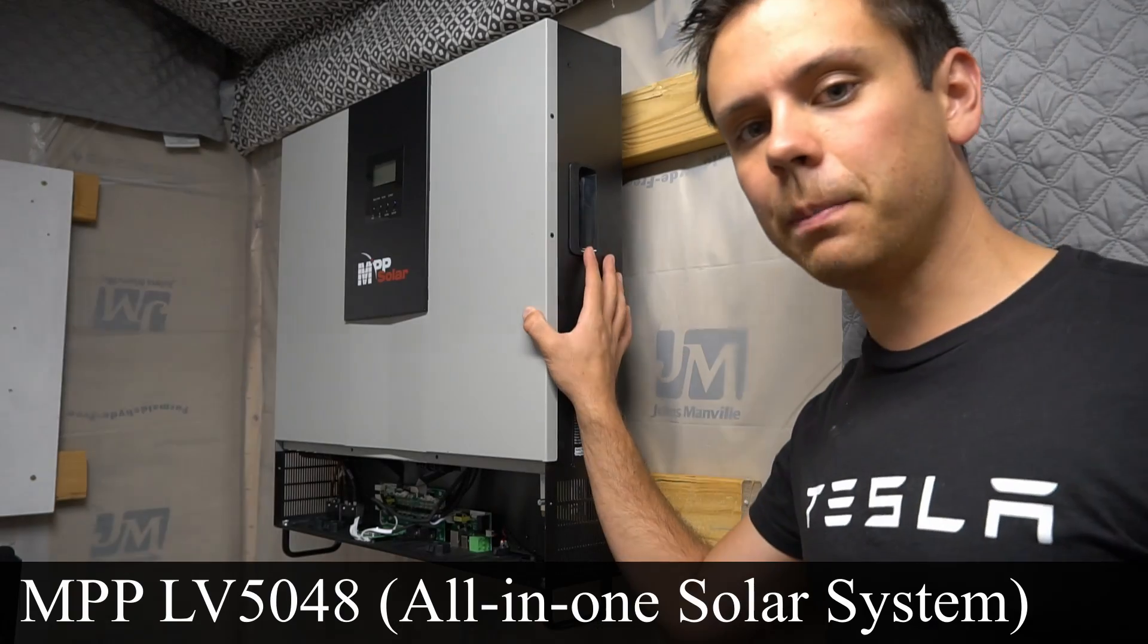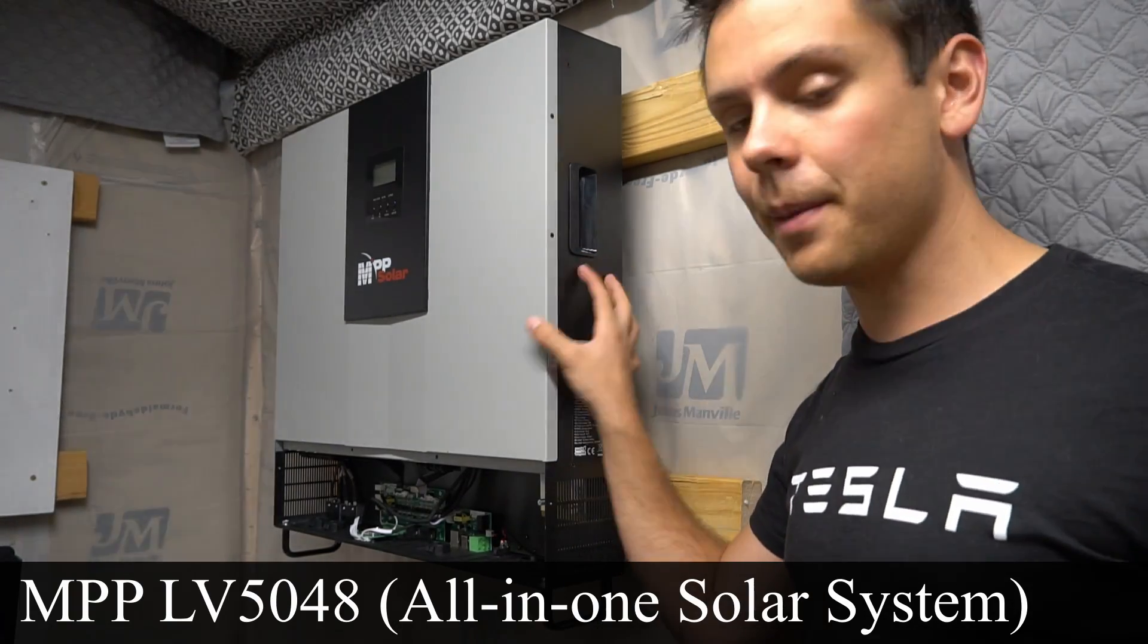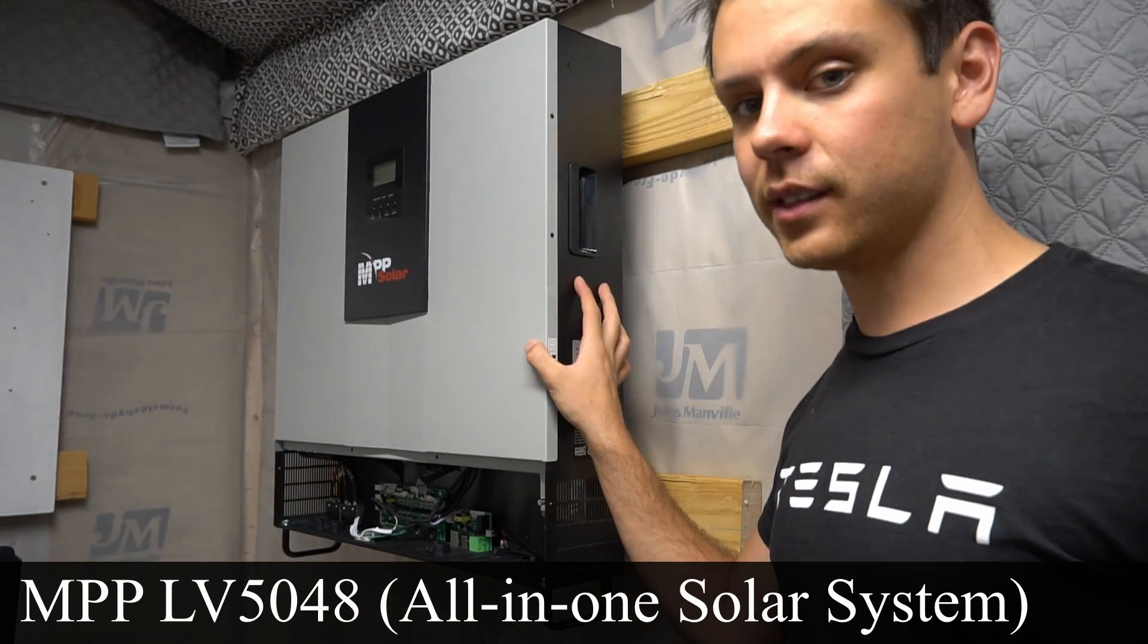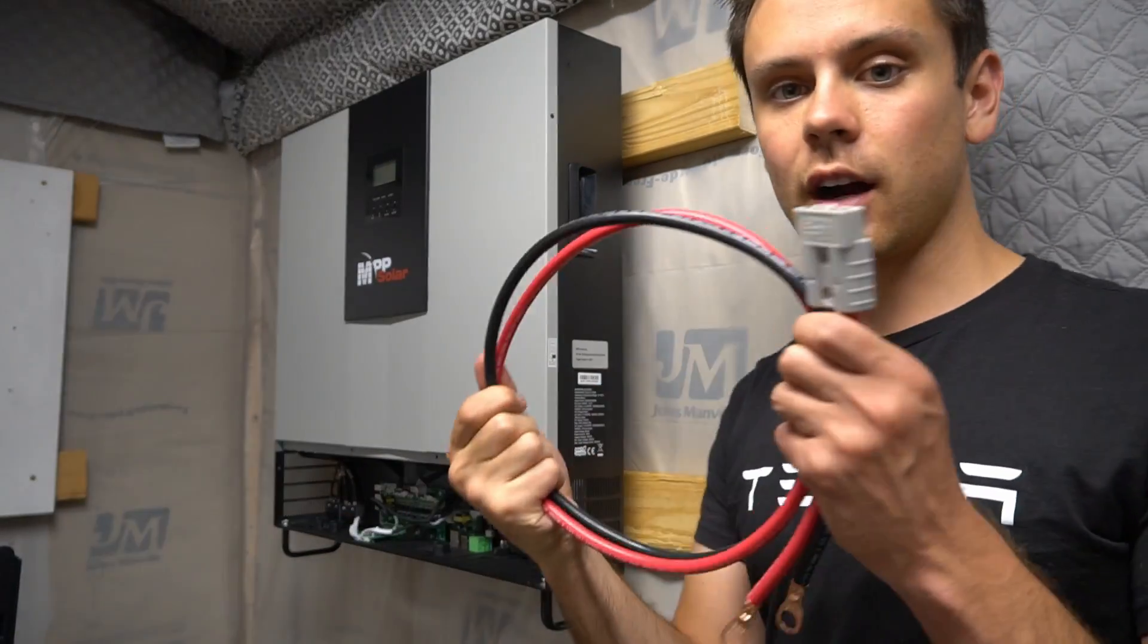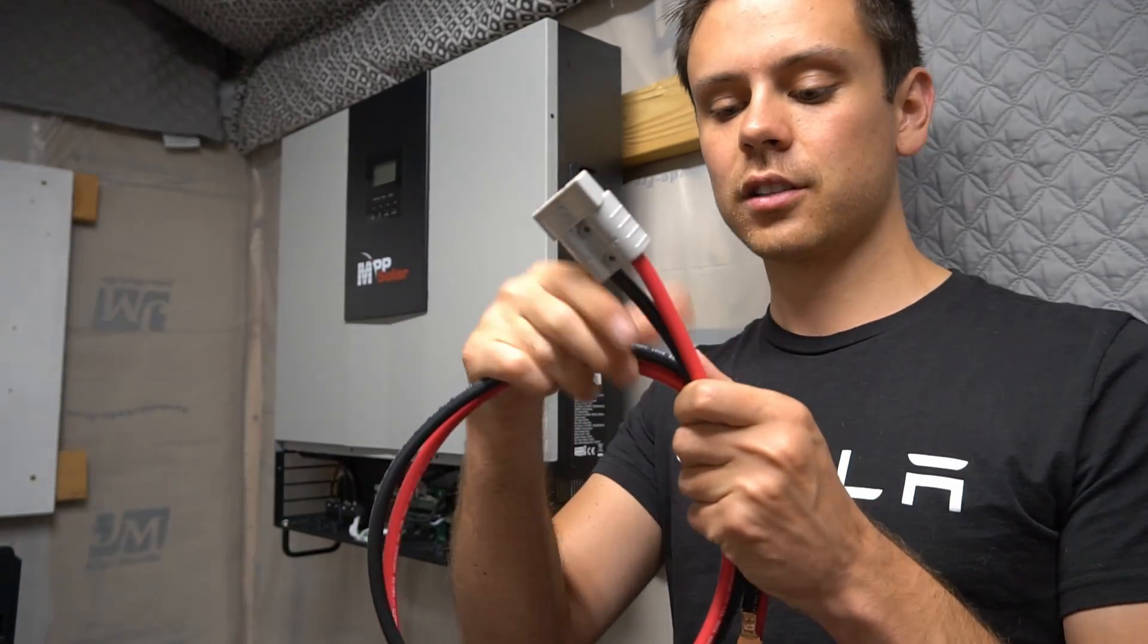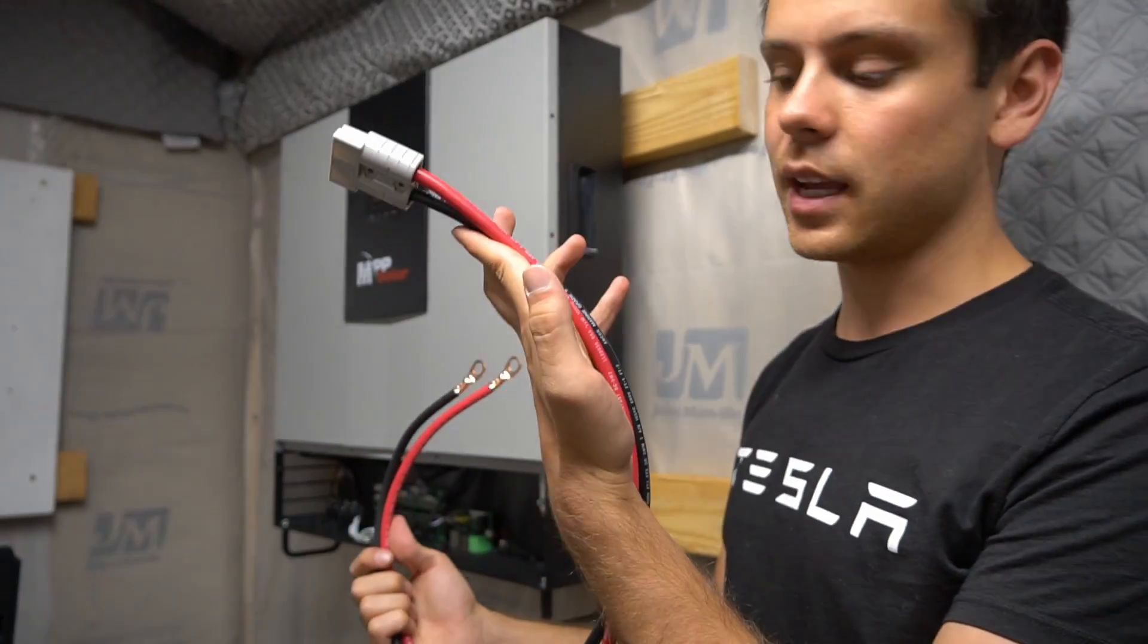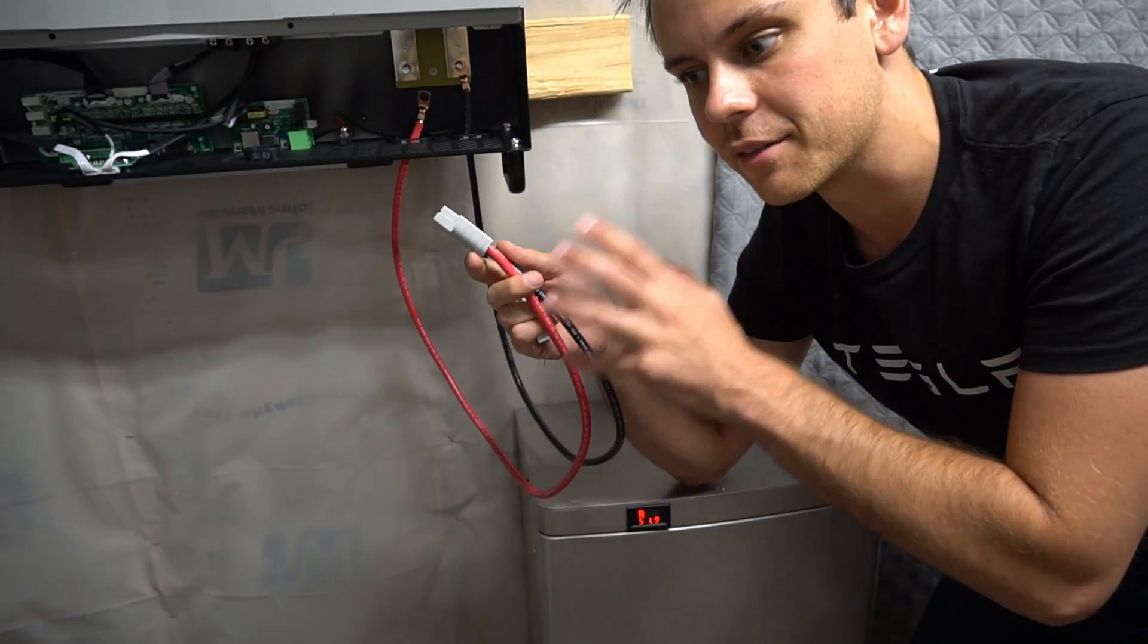This is the MPP-LV5048. This is a massive 5 kilowatt inverter with an MPPT and a huge AC charger. To connect this to our battery, we need to make our own adapter. This is a 50 amp Anderson connector. We have some marine grade 6 gauge wire and some copper lugs. The next step is connecting the battery to the inverter.